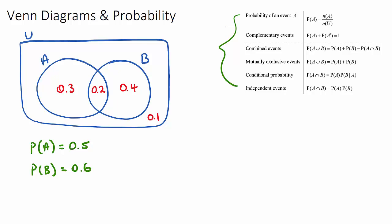If we want to know the probability of not A, this A with a little dash at the top, this is going to be 1 minus the probability of A. So it's going to be 1 minus 0.5, therefore 0.5.